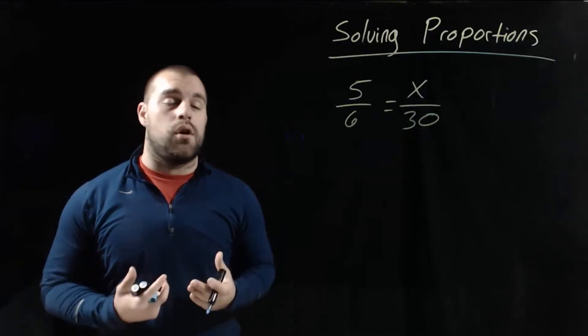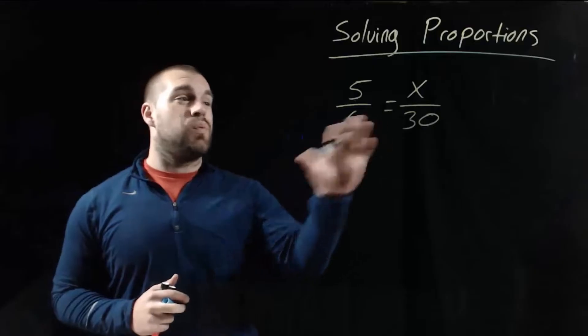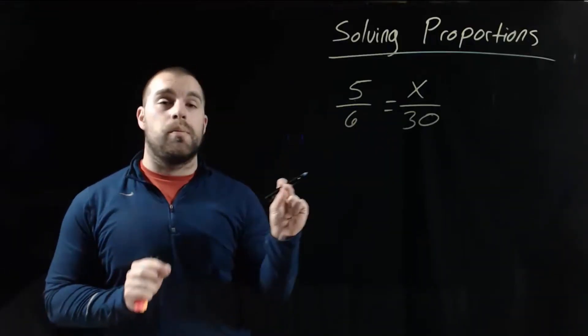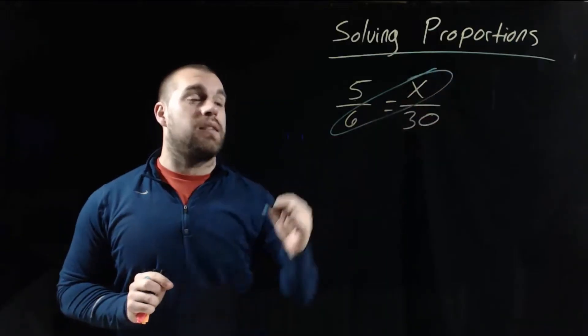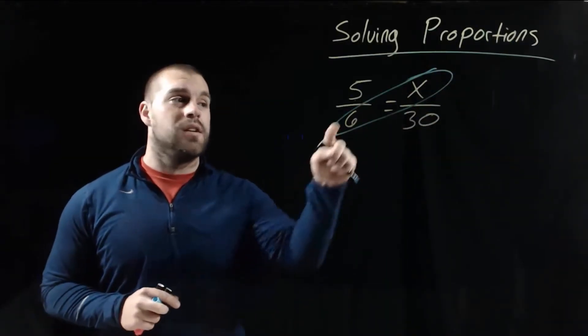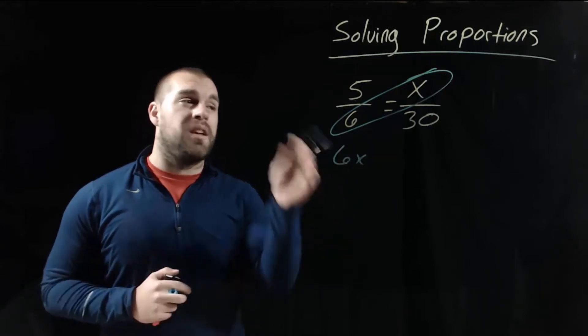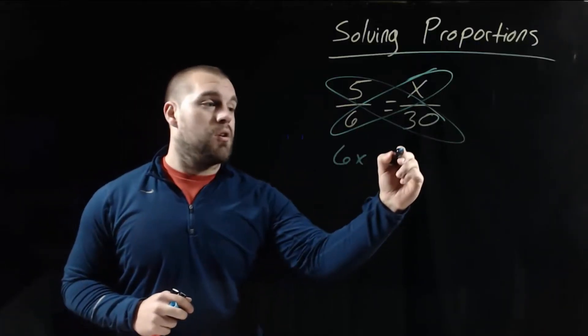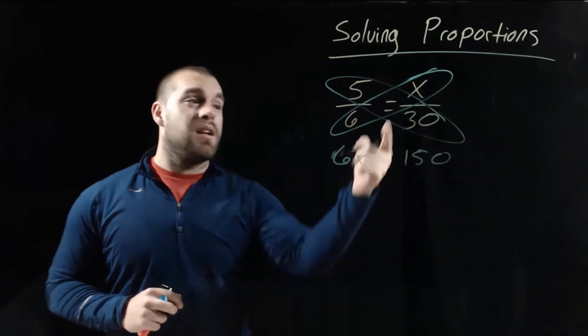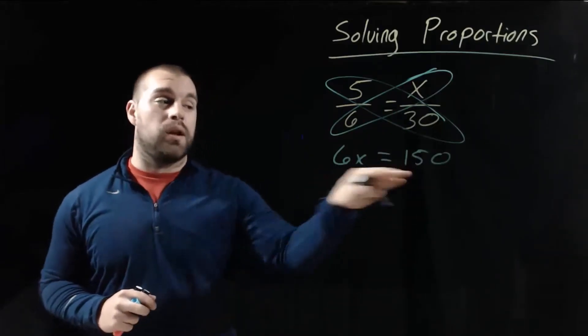When we're looking at solving a proportion, what we're going to do is cross multiply. So with these two fractions, we're going to look at grouping up opposite pieces. We're going to group up this 6 and this x, and multiply those things together. 6 times x would be 6x. And then we're going to group up the other diagonal pieces, the 5 and the 30. If we take 5 times 30, we get 150. Now there was an equal sign between these fractions, so we want to keep the equal sign between our two values.